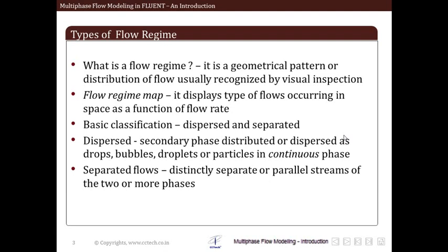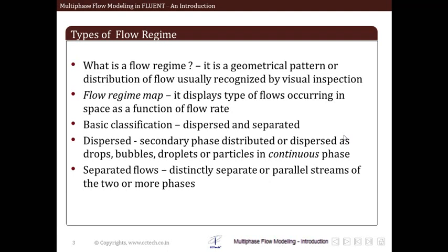So let us see different types of flow regimes. The first question that comes to our mind is: what is a flow regime? A flow regime is a geometrical pattern or distribution of flow usually recognized by visual inspection. That is, if we visually see a multiphase flow we can categorize the vast range of multiphase flows into different regimes depending upon how they look. Such different regimes or geometrical patterns are known as flow regimes.